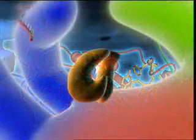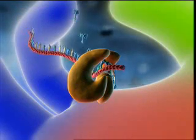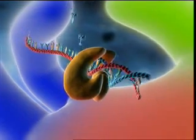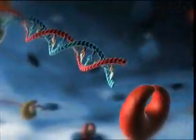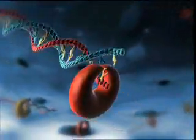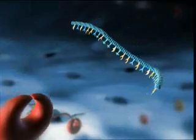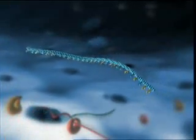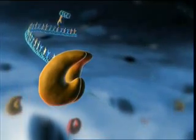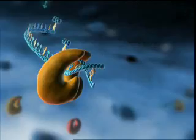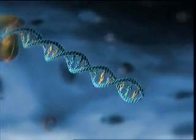Single-stranded viral RNA is transcribed into an RNA-DNA double helix. Ribonuclease H breaks down the RNA. The polymerase then completes the remaining DNA strand to form a DNA double helix. This proviral DNA contains the genetic material of HIV-1.